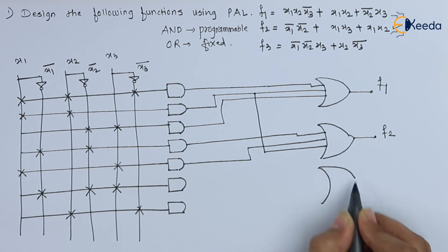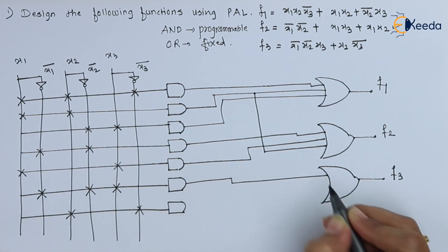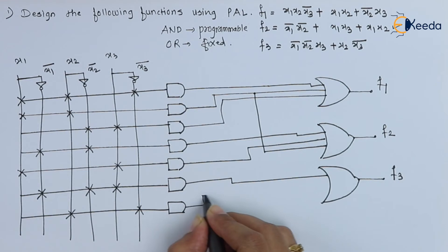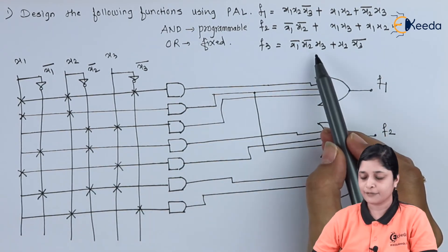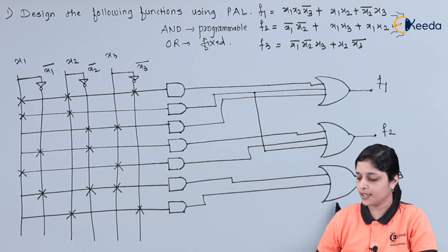Now we have again one more OR gate. This is your F3. This output you require for F3 and the last one is x2 x3 bar. So if you see your function F3, it consists of addition of these two terms and we have drawn here for implementation of function 3.